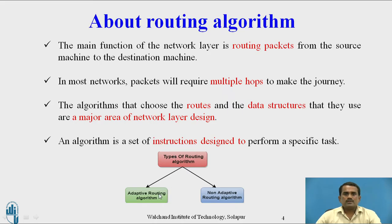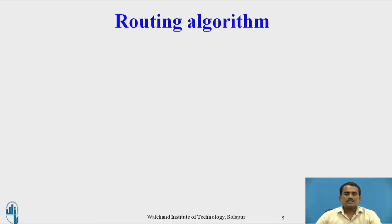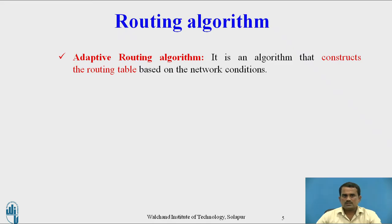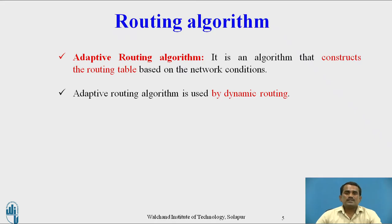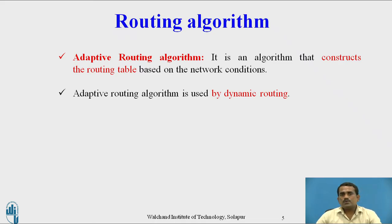Types of routing algorithms: first is adaptive routing algorithm, and second is non-adaptive routing algorithm. An adaptive routing algorithm constructs the routing table based on the network condition. As the user sends data or packets, the routing table is prepared based on how the packet arrives and moves to the next user — this is determined by the network conditions.